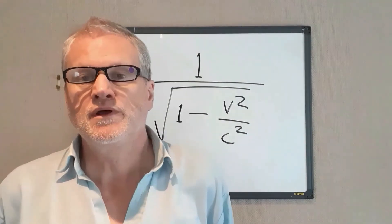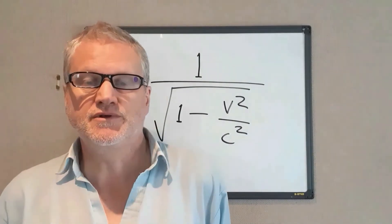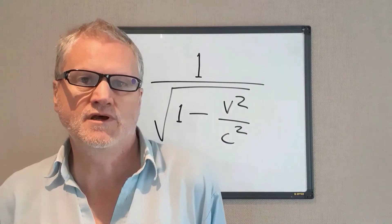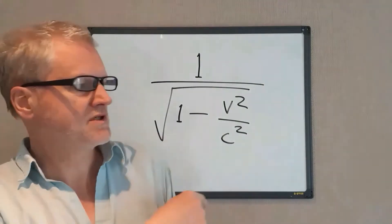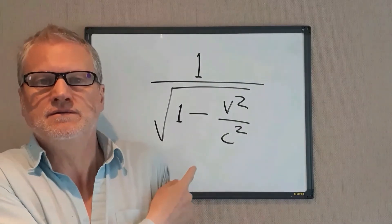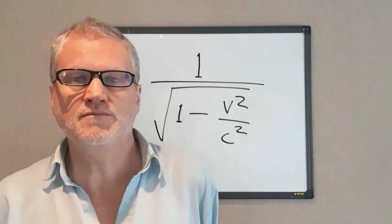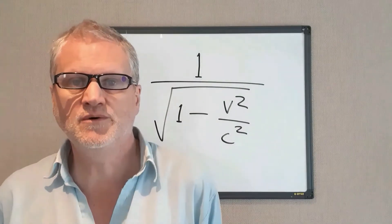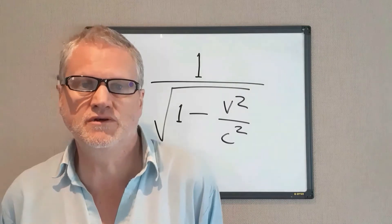Hi, I'm going to talk about Einstein's special theory of relativity and how it is derived, specifically this equation here, the so-called Lorentz factor, which is the absolute basis, the foundation of the special theory of relativity.